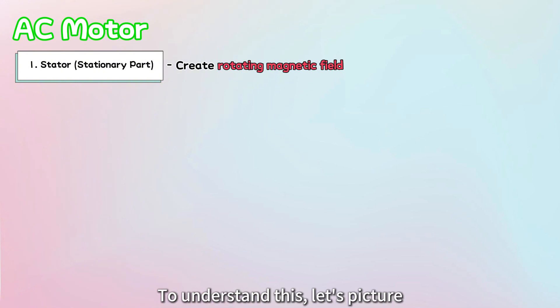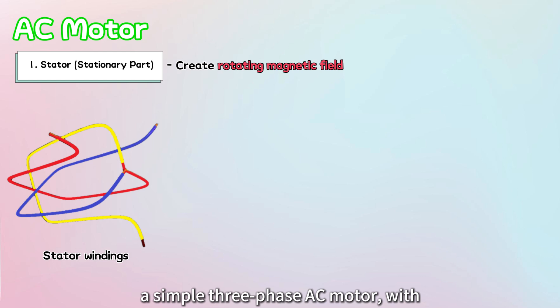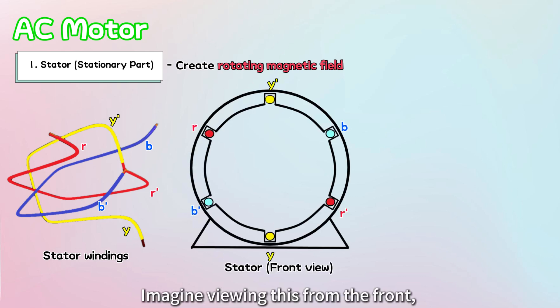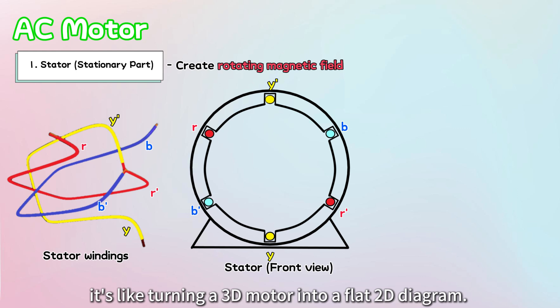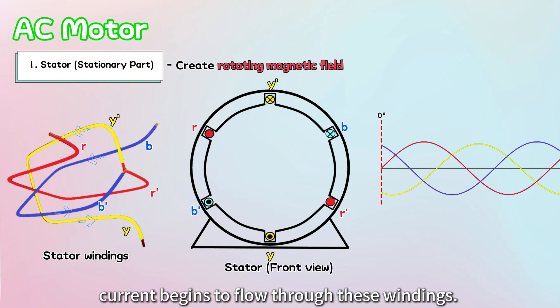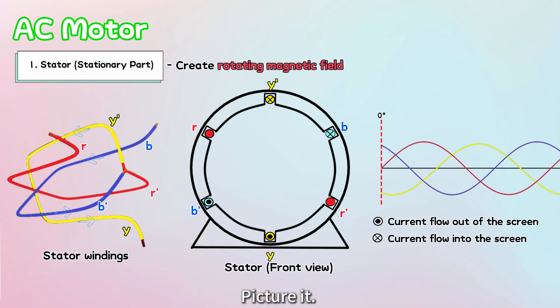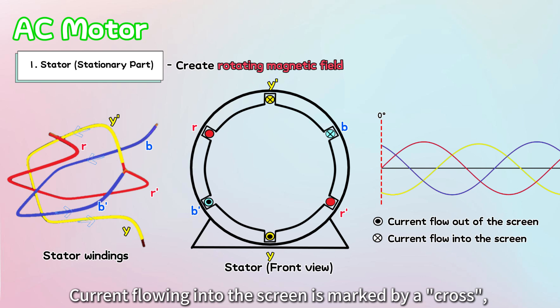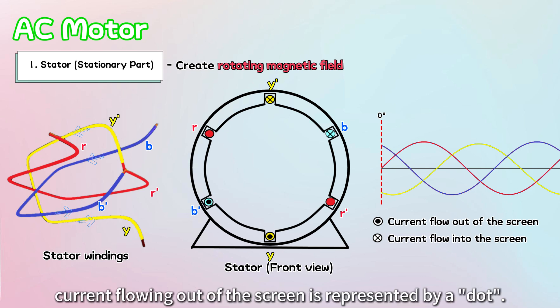To understand this, let's picture a simple three-phase AC motor with windings labeled R, Y, and B. The other end is labeled R', Y', and B'. Imagine viewing this from the front, it's like turning a 3D motor into a flat 2D diagram. When we apply a three-phase supply, current begins to flow through these windings. Current flowing into the screen is marked by a cross, while current flowing out of the screen is represented by a dot.